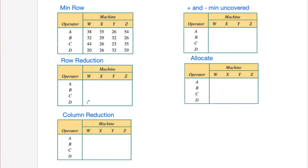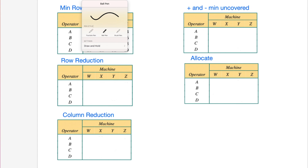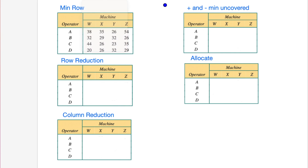The Hungarian algorithm goes through all the different possibilities without us actually having to consider every single one of them - we just work through the steps. The textbook does it in a confusing way. You can speed it up by not covering the zeros with a minimum number of lines every single step. You'll usually need to subtract from the rows and columns first before you'll even be close to allocating. So the first thing is to identify the minimum number in each row.